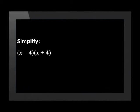We use FOIL to multiply out the two brackets. x times x is x squared. x times 4 is 4x. Minus 4 times x is minus 4x. And minus 4 times 4 is minus 16.